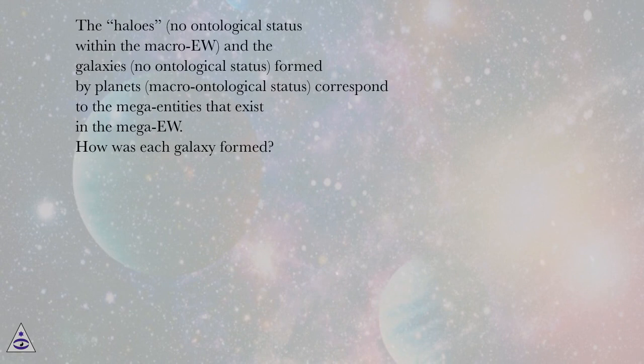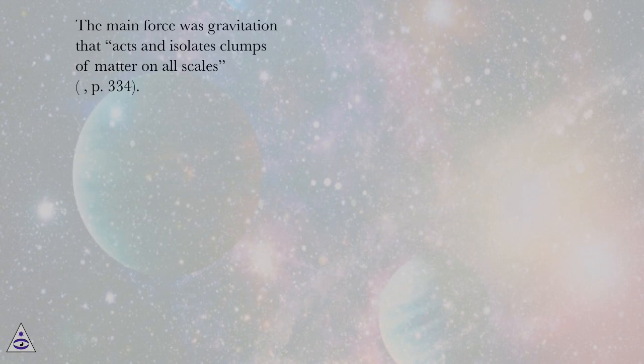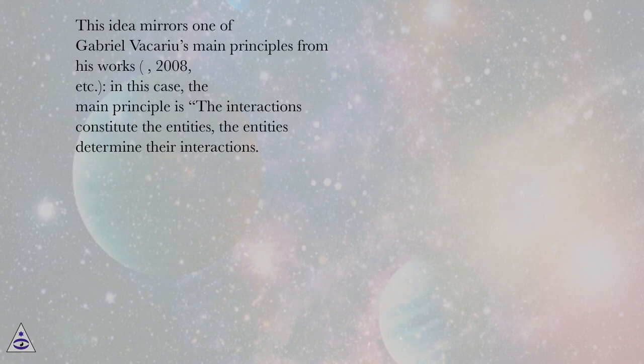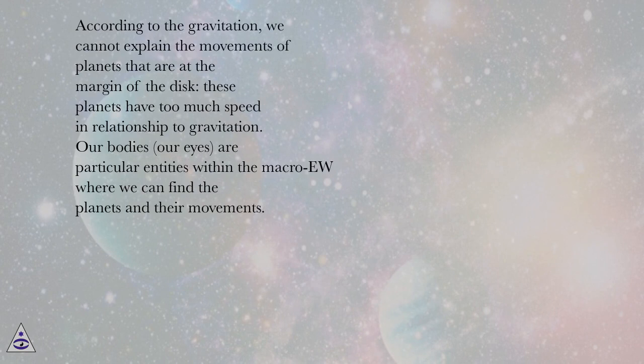How was each galaxy formed? The main force was gravitation that acts and isolates clumps of matter on all scales, page 334. This idea mirrors one of Gabriel Vacariu's main principles from his works, 2008, etc. In this case, the main principle is the interactions constitute the entities, the entities determine their interactions. According to the gravitation, we cannot explain the movements of planets that are at the margin of the disk. These planets have too much speed in relationship to gravitation.